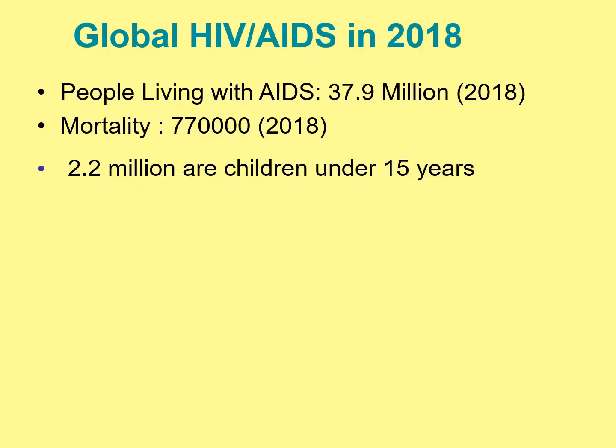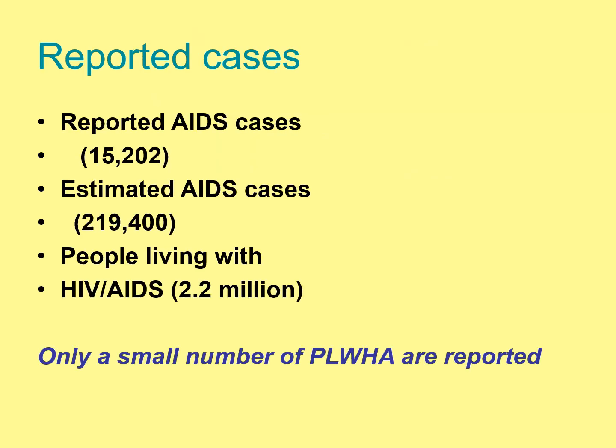Globally, there are 37.9 million people living with AIDS with a mortality of 770,000. This is for the year 2018. There are reported cases around 15,202 estimated AIDS cases and people living with HIV.